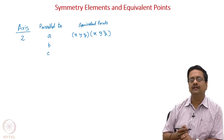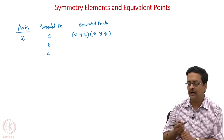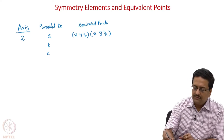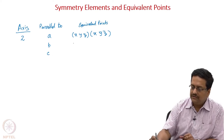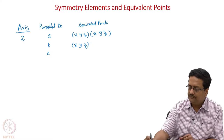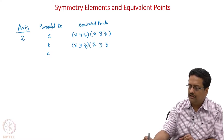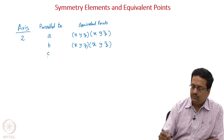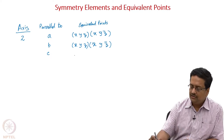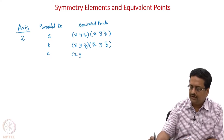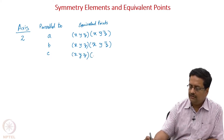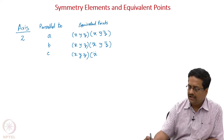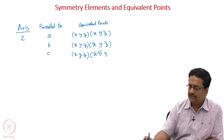Anything negative is written in crystallography as 'bar.' Two-fold parallel to B gives equivalent points x, y, z and x̄, y, z̄. Two-fold parallel to C gives x, y, z and x̄, ȳ, z.